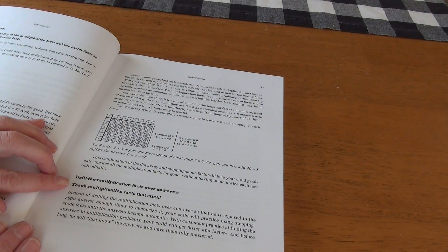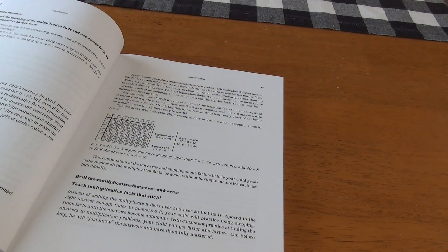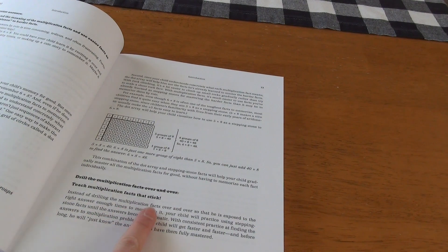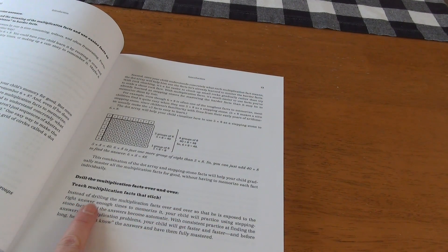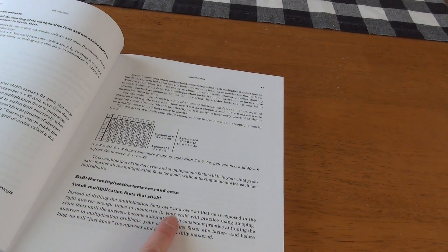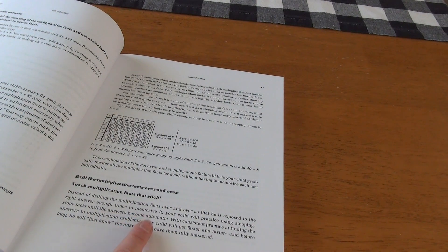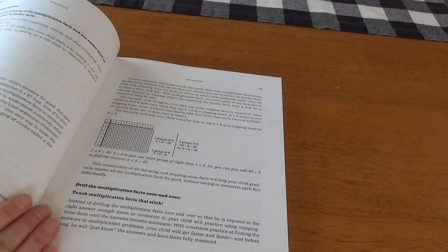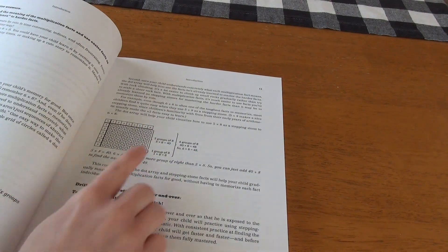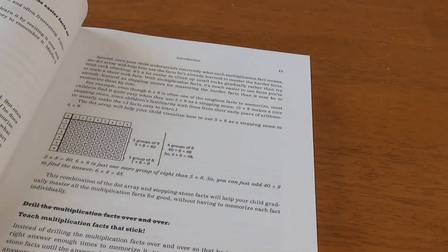So instead of drilling the multiplication facts over and over, she says that we teach multiplication facts that stick. Instead of drilling the facts over and over so they are exposed to the right answer enough times to memorize it, your child will practice using stepping stone facts until the answer becomes automatic. So an example of a stepping stone is we know that five times eight equals 40. So six groups of eight would be 40 plus eight.